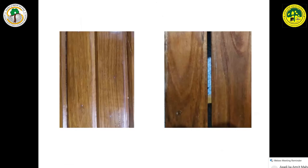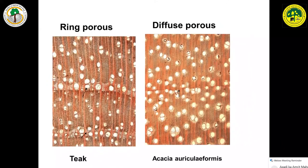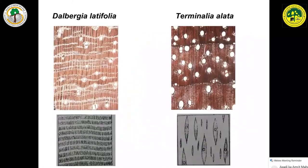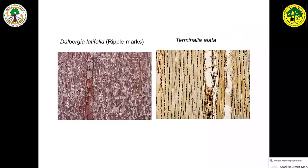In some cases, timbers are adulterated. When looking at these two photographs, they look the same, but they are different — the first one is teak, the second is Acacia auriculiformis. Morphologically they look alike. By studying anatomical characters, we can differentiate them: teak is ring porous, whereas Acacia auriculiformis is diffuse porous. Even in color and weight, sometimes adulteration occurs, but by looking at the structure, we can identify what it really is.